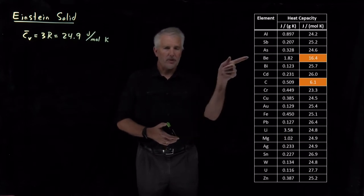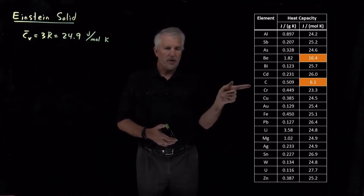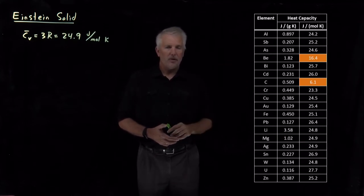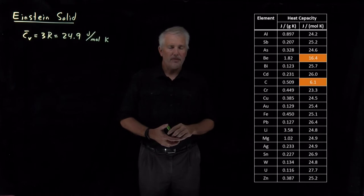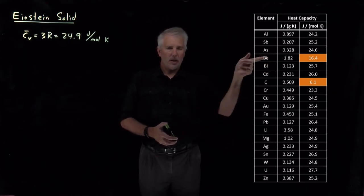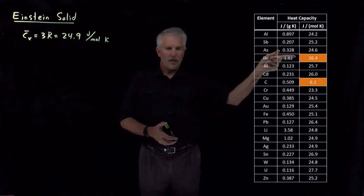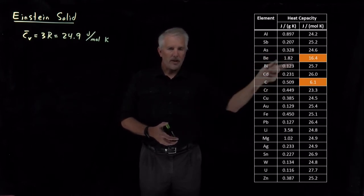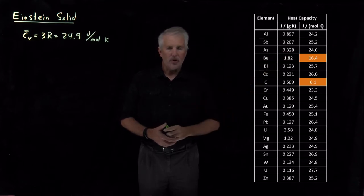But there are a few exceptions. Beryllium and carbon both have constant volume heat capacities that are quite a bit lower than the Equipartition Theorem or Dulong and Petit would predict. So we need to understand why that's happening.